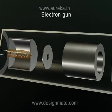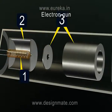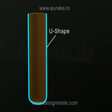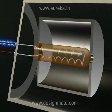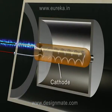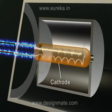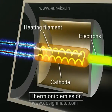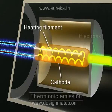Electron Gun consists of a number of electrodes. Cathode is a U-shaped tube made of platinum or tungsten, coated with a mixture of barium and strontium oxides. When current is supplied to the heating filament, it heats up the cathode to a high temperature, which emits a large number of electrons by means of thermionic emission.